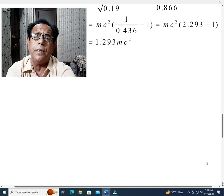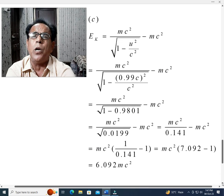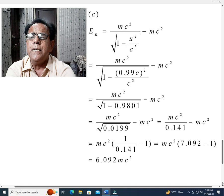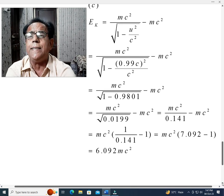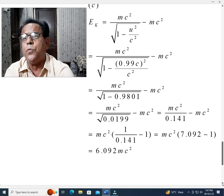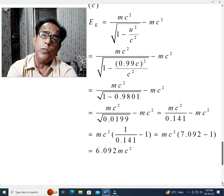Now, we come towards part c. Here in place of 0.5 or 0.9, u has been taken as 0.99c. 0.9c means 90 percent of the speed of light. 0.99c means 99 percent of the speed of light.